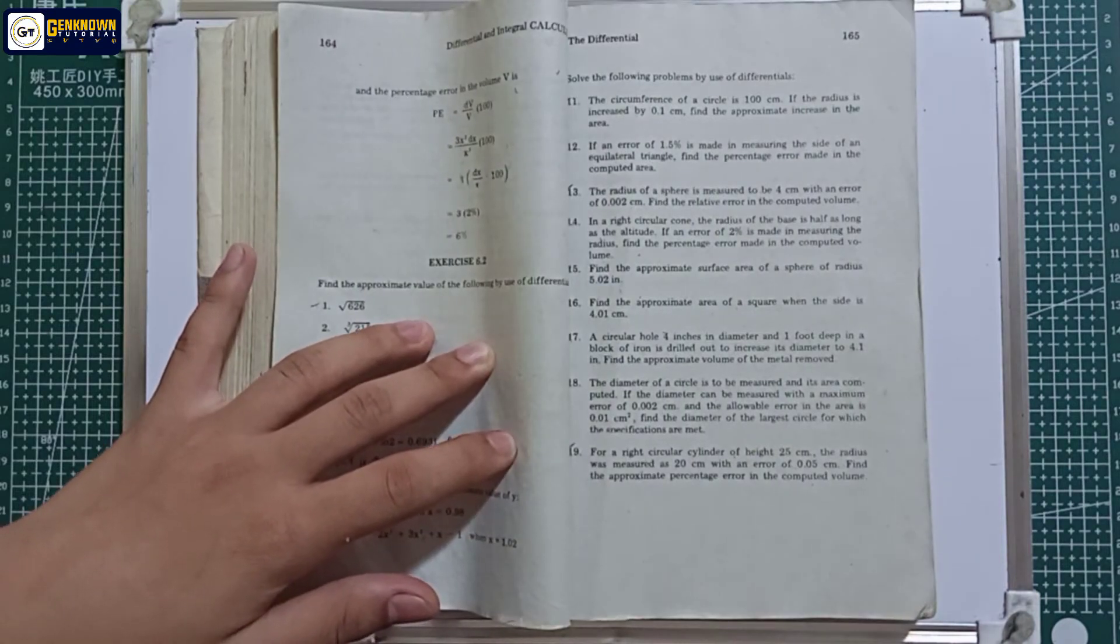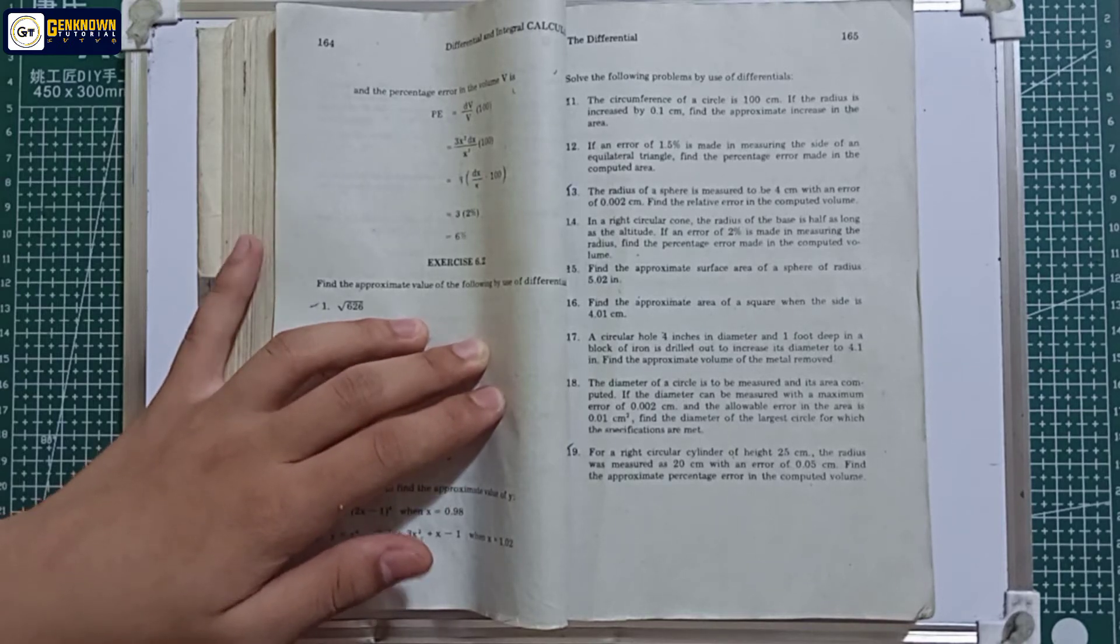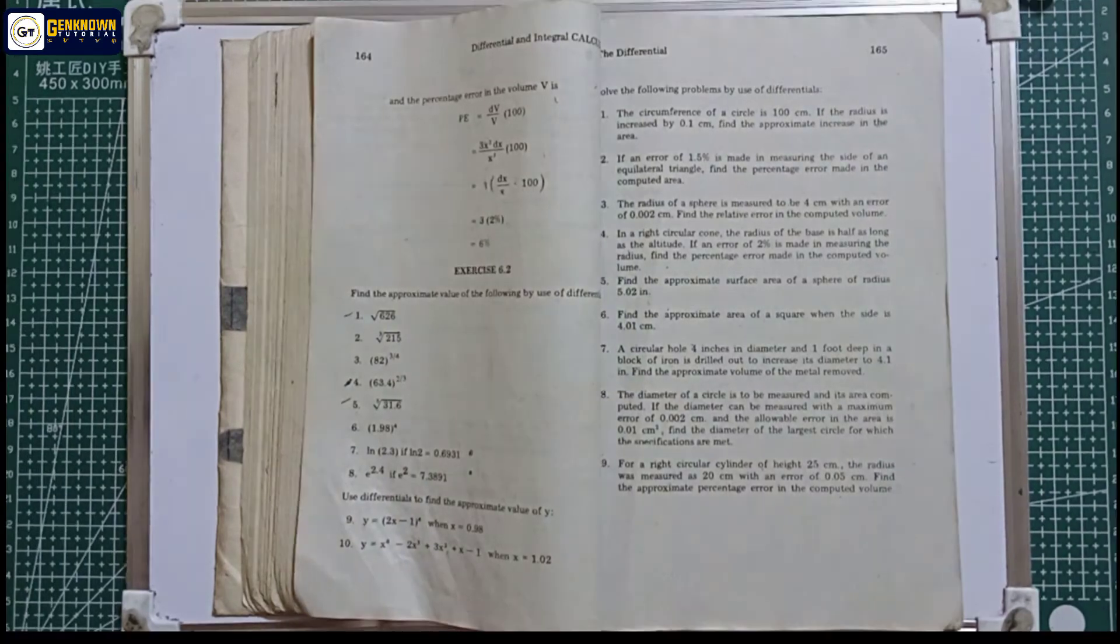the sphere is measured as 4 cm with an error of 0.002 cm. Find the relative error in the computed volume. The object here is a sphere where we have a radius of 4 cm and an error of 0.002 cm. What we're finding is the relative error computed in the volume of the sphere.